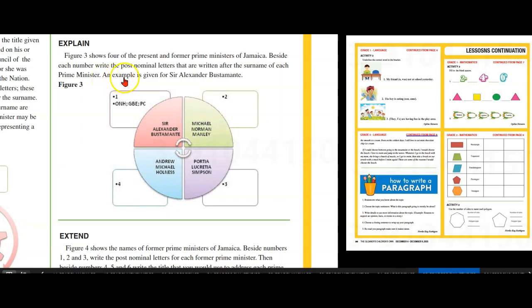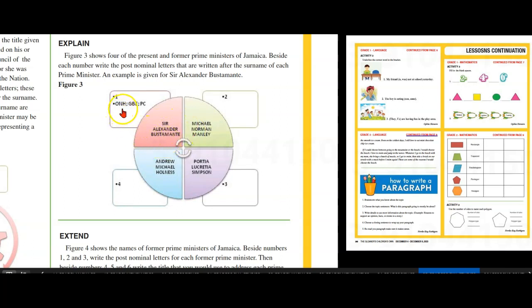Access the Internet and find images and post-nominal letters of the present and former Prime Ministers of Jamaica. Figure 3 shows four of the present and former Prime Ministers of Jamaica. Beside each number, write the post-nominal letters written after the surname of each Prime Minister. An example is given for Sir Alexander Bustamante: O-N-H, G-B-E, and P-C.